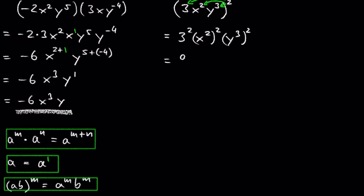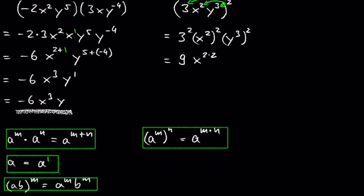3 squared is 9. When we have x raised to a power and then that is raised to another power again, we can multiply the exponents together and we get x raised to 2 times 2. This also works for y cubed raised to the power of 2. So we get 9 times x raised to the power of 4 times y raised to the power of 6.